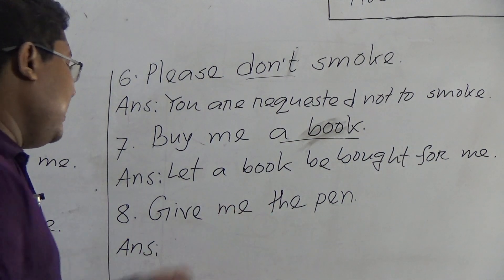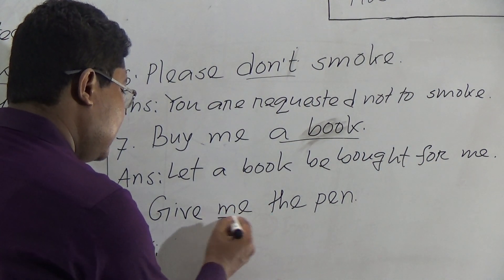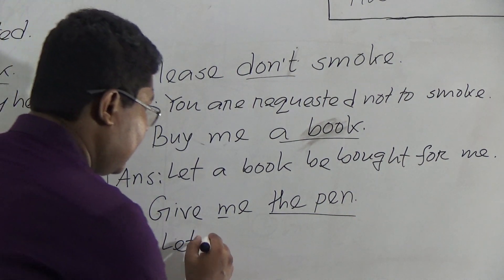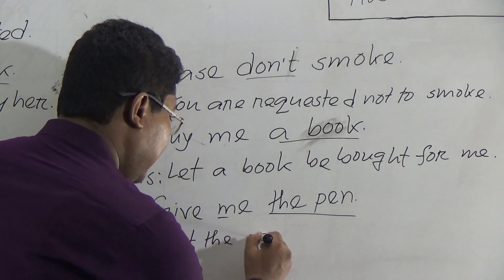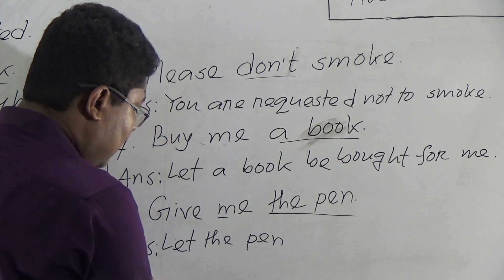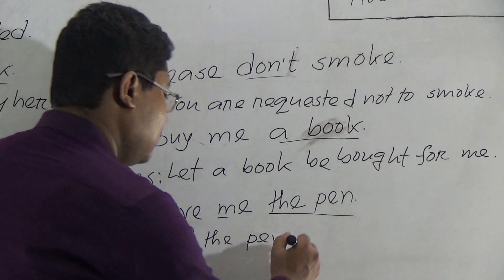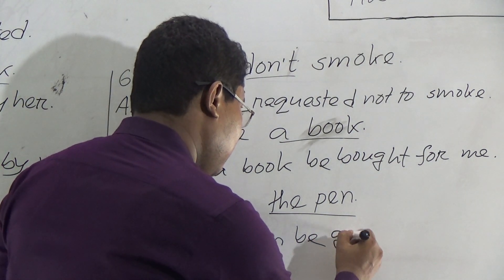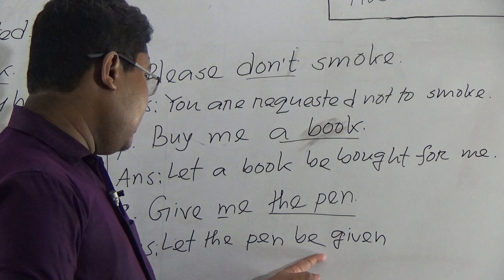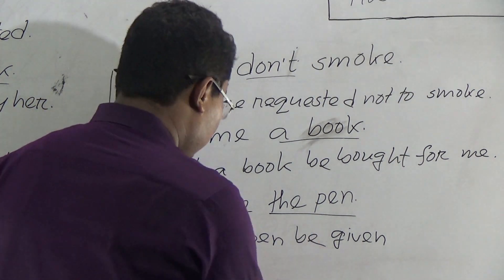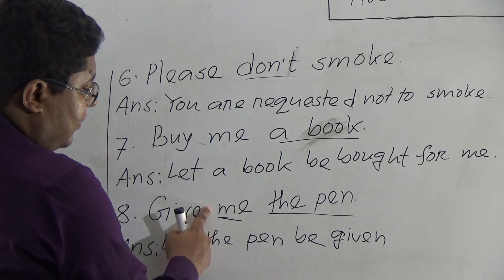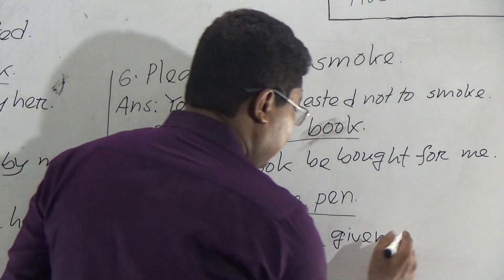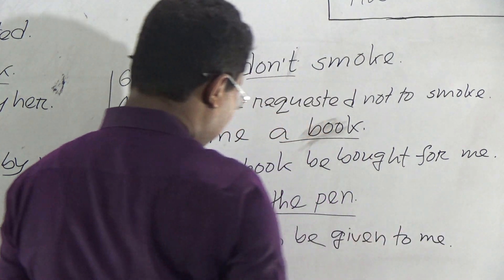Example eight: 'Give me the pen.' This sentence also has two objects: 'me' (indirect) and 'the pen' (direct). Take 'let,' then the direct object becomes subject: 'Let the pen.' Add 'be' and past participle: 'given.' Then add 'to' or 'for' before the indirect object. Result: 'Let the pen be given to me.'